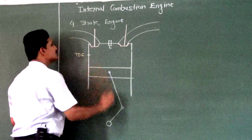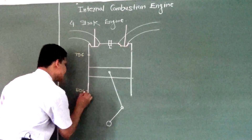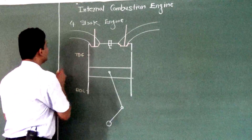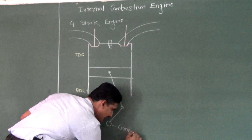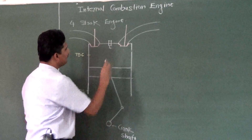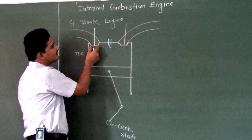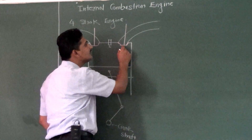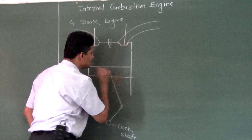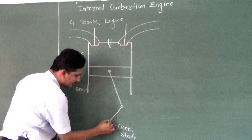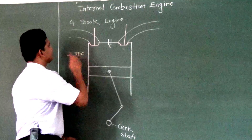Let us show the TDC — top dead center — position, and on the bottom side the BDC position. The distance between TDC and BDC is called a stroke. This is the crankshaft. The valve fitted inside the inlet manifold is called the inlet valve; the valve fitted inside the outlet manifold is called the exhaust valve. This is the piston, connecting rod, crank, and crankshaft. We take mechanical energy output from this particular shaft.